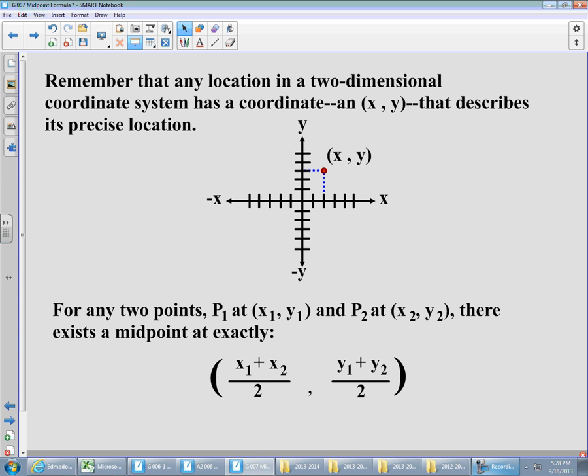The formula says, basically, in plain English, the sum of the x values divided by two, comma, the sum of the y values divided by two. Or, another way of thinking about it, is the average of the two x's, comma, the average of the two y's. Please copy the formula down, make sure that you get it right.